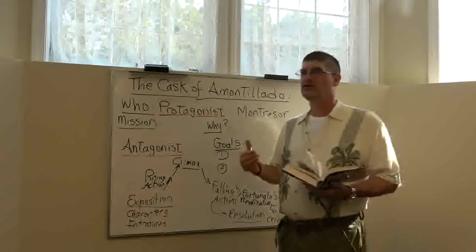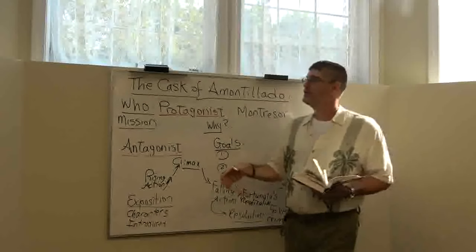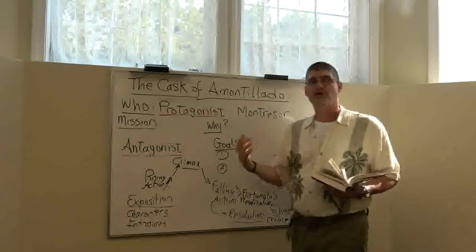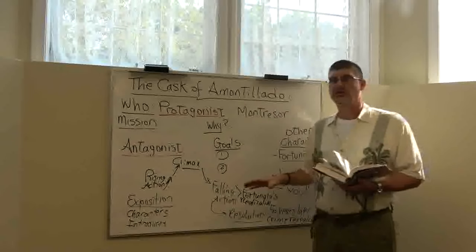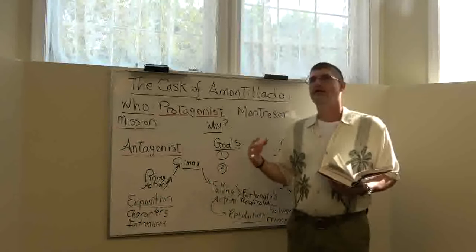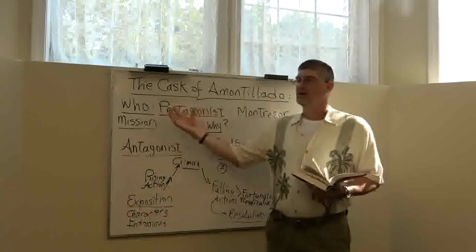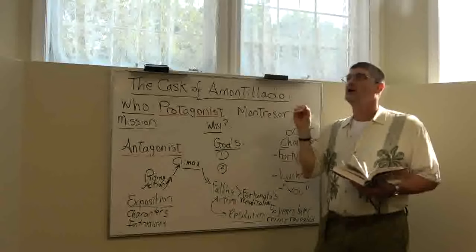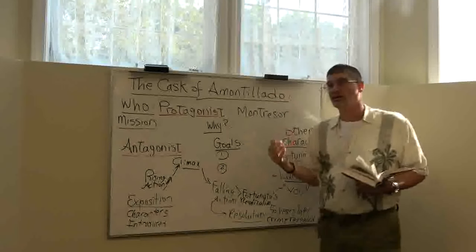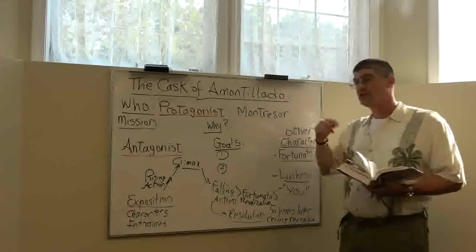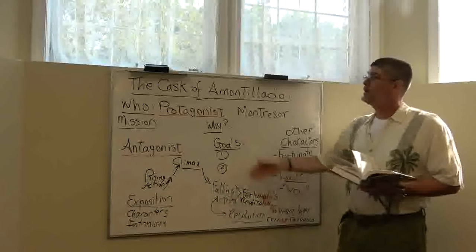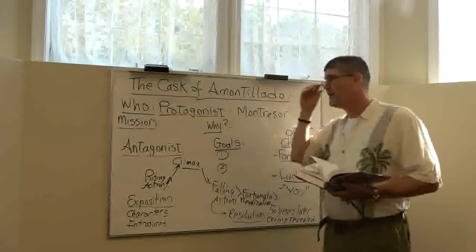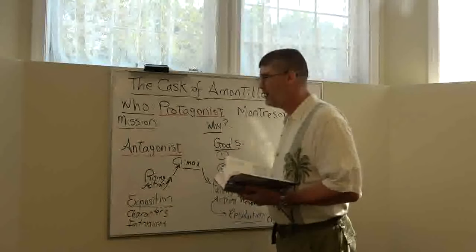I'm not going to go into the story in tremendous detail because there's a lot going on, and the story I'm referring to is, of course, The Cask of Amontillado by Edgar Allan Poe. My purpose here is to model how to approach the story and select out the key parts as they relate to what we've talked about already — characters, conflict, and plot. We will also discuss dramatic irony as we go.